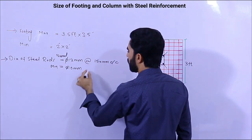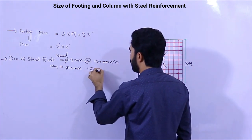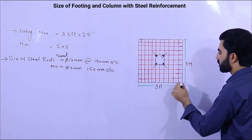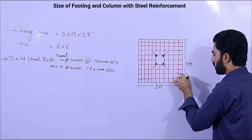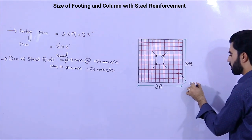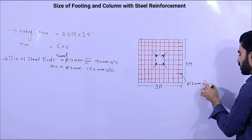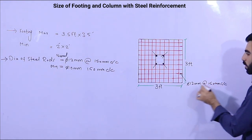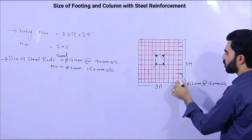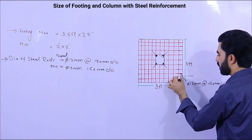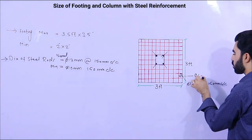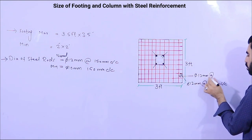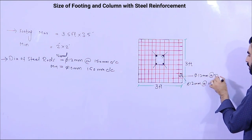As you can see here, the center-to-center distance between two steel rods — the steel diameter should be 12 mm with spacing of 150 mm. One set is the distribution bar and the other is the main bar. The main bar should also be 12 mm diameter with spacing of 150 mm.